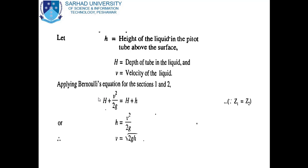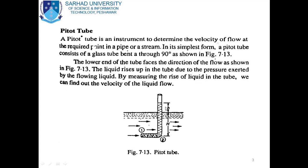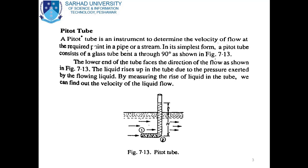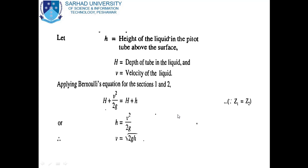Let h equal the height of liquid in the Pitot tube above the surface, denoted by small h. Capital H equals the depth of tube in the liquid, or the total height of the tube. And v is the velocity of the liquid flowing.